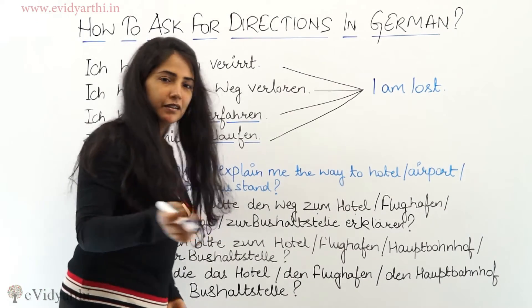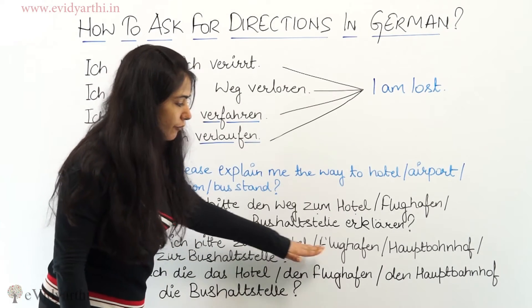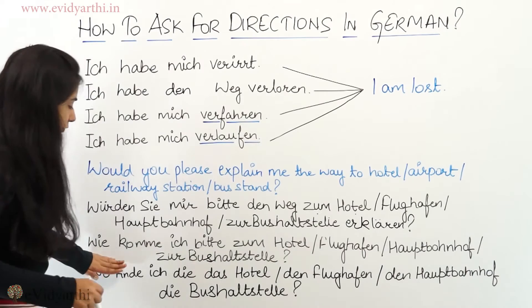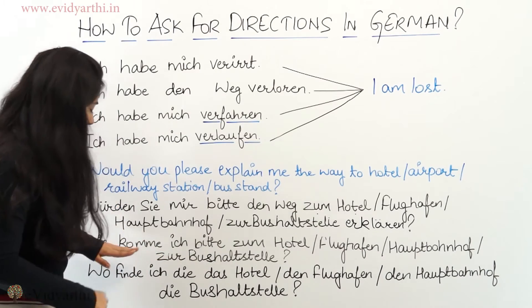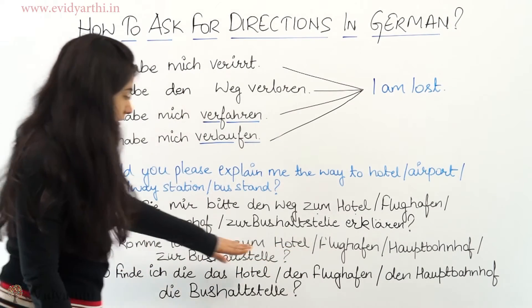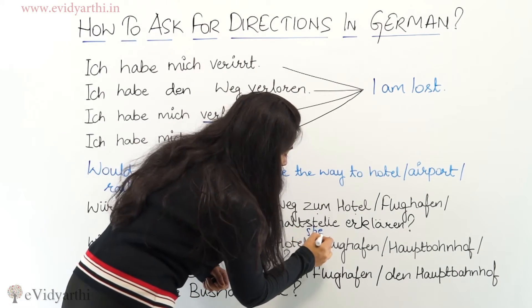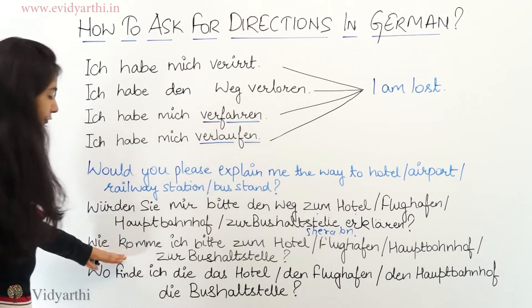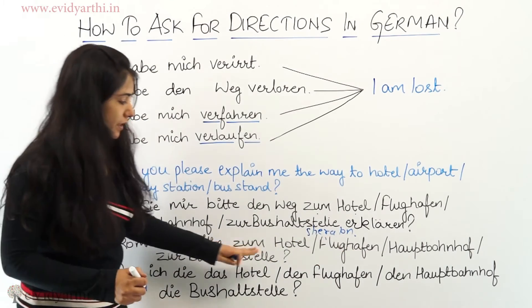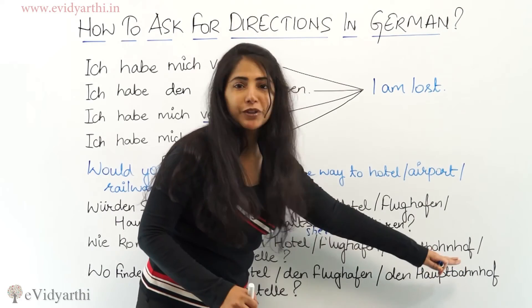There is another way of asking the same question: 'Wie komme ich bitte zum Hotel?' or 'zum Flughafen?' or 'zum Hauptbahnhof?' For example with a hotel name: 'Wie komme ich bitte zum Hotel Sheraton?' You can also say 'Wie komme ich bitte zum Flughafen?', 'Wie komme ich bitte zum Hauptbahnhof?' for railway station, or 'Wie komme ich bitte zur Bushaltestelle?' for bus stop.